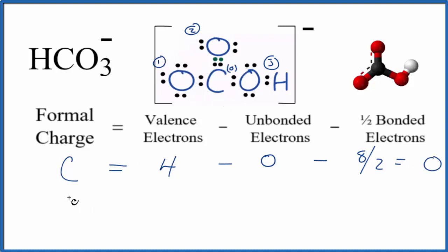For oxygen number one, let's call this oxygen number one here. Oxygen is in group 16, sometimes called 6A, so it'll have six valence electrons. Unbonded: two, four, six.